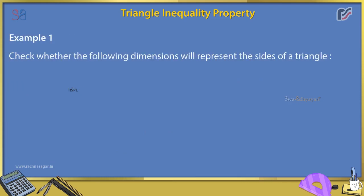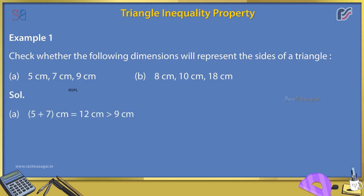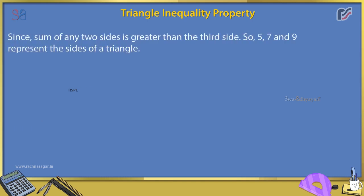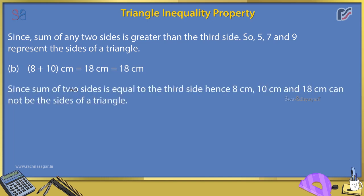Example 1: Check whether the following dimensions represent the sides of a triangle. A: 5 cm, 7 cm, 9 cm — 5+7=12>9, 5+9=14>7, 7+9=16>5, so yes, they form a triangle. B: 8 cm, 10 cm, 18 cm — 8+10=18, which equals 18, not greater, so 8 cm, 10 cm, and 18 cm cannot be the sides of a triangle.